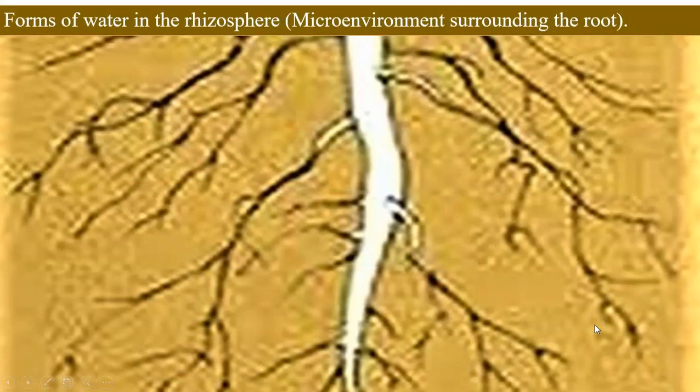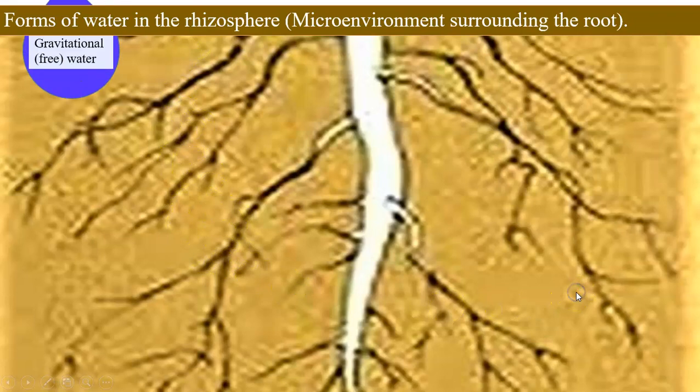Forms of water in the microenvironment of soil surrounding the root. This microenvironment is called rhizosphere and we are going to understand the different forms of water available in this rhizosphere.